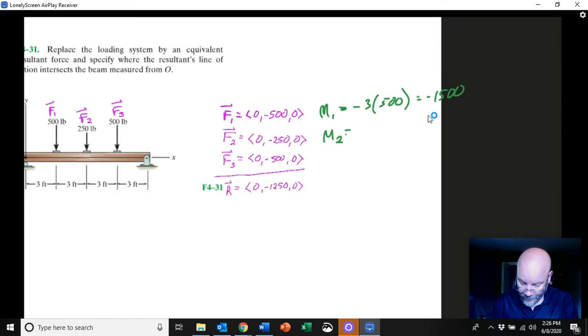So M2, minus six onto the 250, and that also is minus 1500. And then finally M3, which is out there a distance of nine feet, and so it's going to give considerably more moment than the other two.